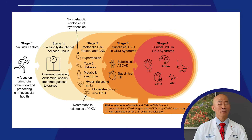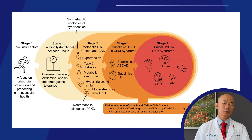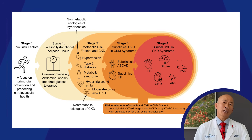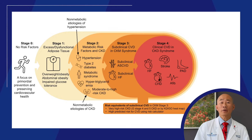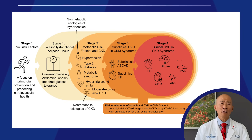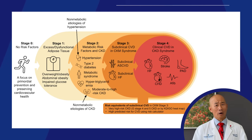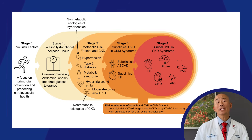Then there's Stage 3, which is subclinical cardiovascular disease. Patients may have overlapping CKM risk factors or very high risk CKD. Lastly, Stage 4 — this is clinical cardiovascular disease. This includes coronary artery disease, heart failure, stroke, PAD, or atrial fibrillation.